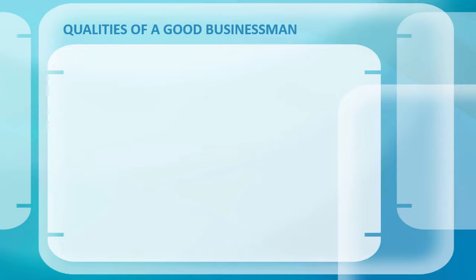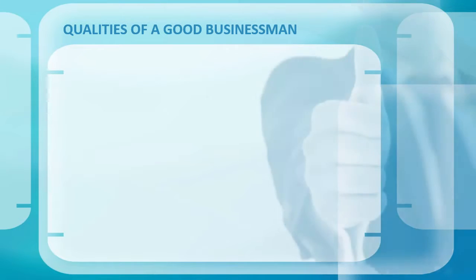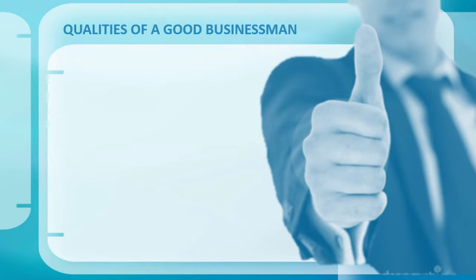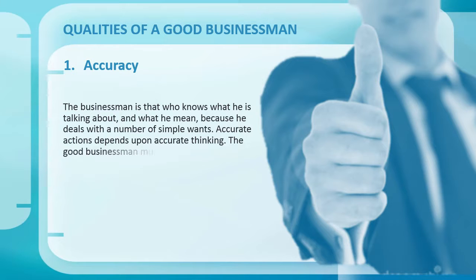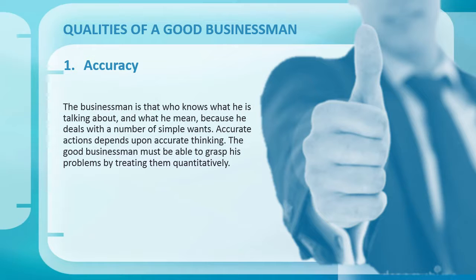Qualities of a good businessman: well-managed businessmen are persons who have inherent or acquired qualities of leadership and direction. A businessman must be a well-balanced and full-fledged man of talent with a consistent mind of clearness, steadiness, and firmness in dealings with others. Accuracy: the businessman knows what he is talking about and what he means. Accurate action depends upon accurate thinking, and the good businessman must be able to grasp his problems by treating them quantitatively.